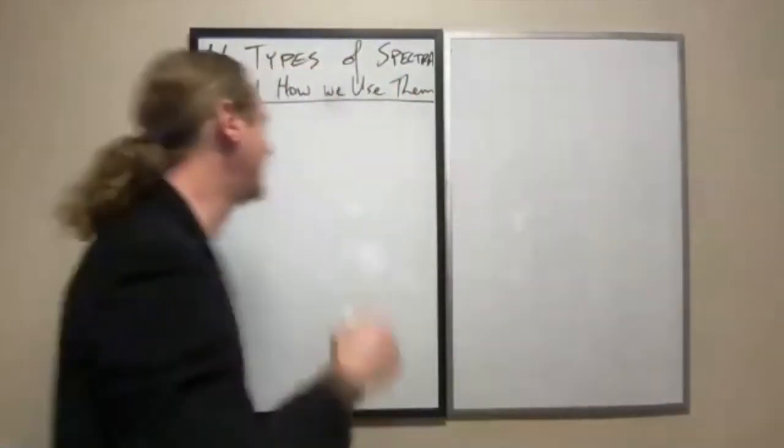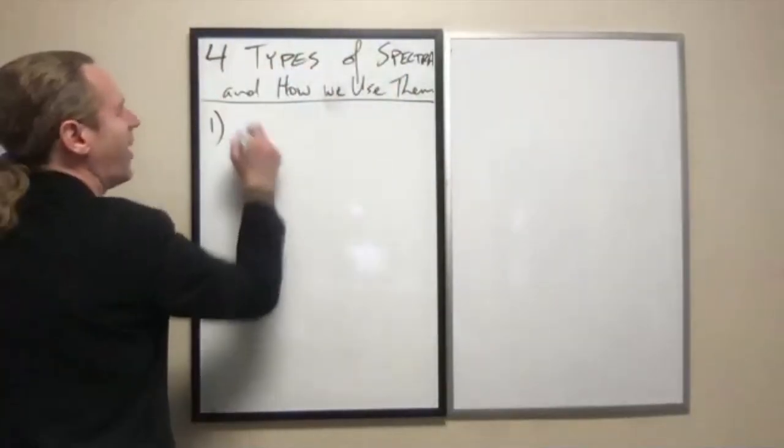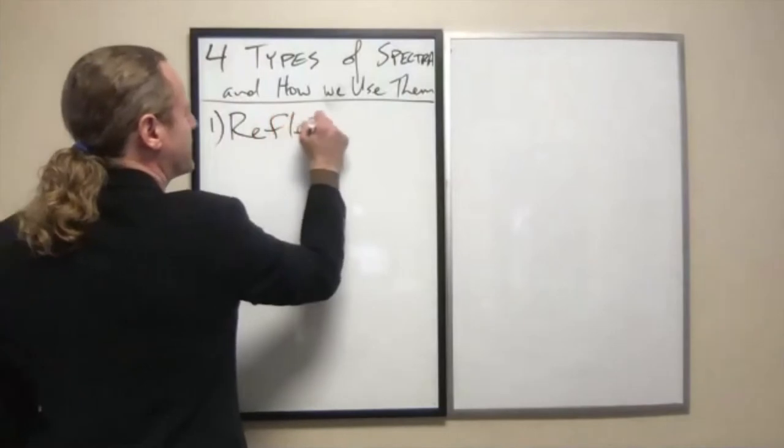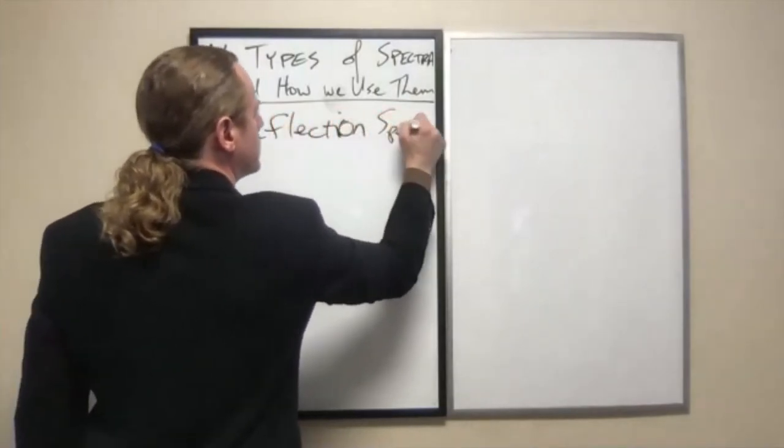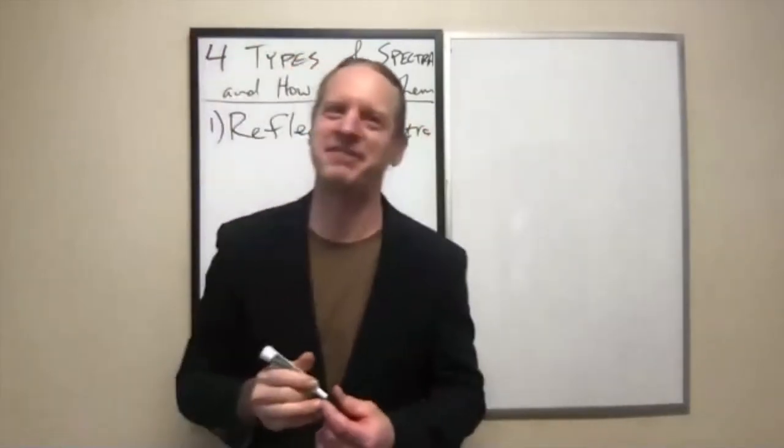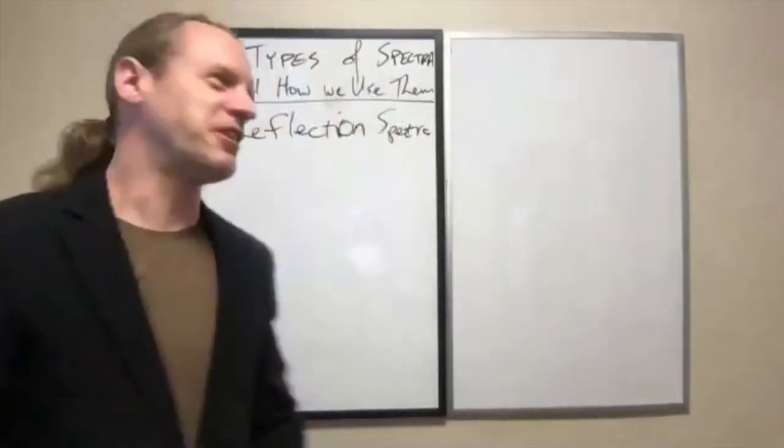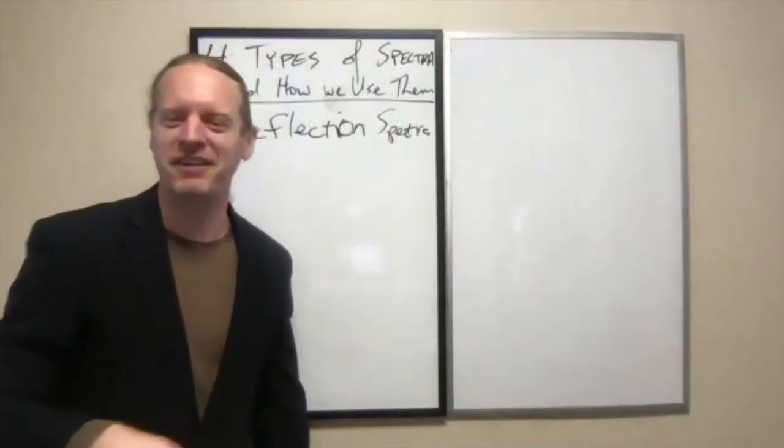Four types of spectra. We have number one, a reflection spectra. Because honestly, this is the one that you deal with the most in everyday life. The other three are somewhat, actually, significantly rarer in everyday life.